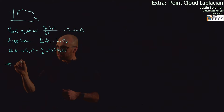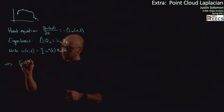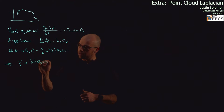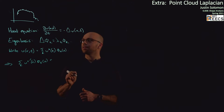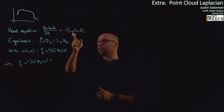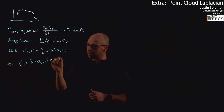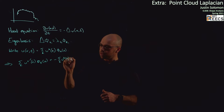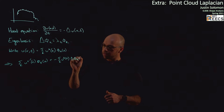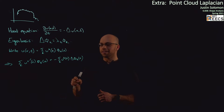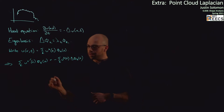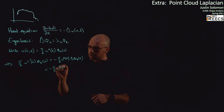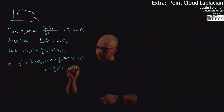If I write things in this eigenbasis and look back at the heat equation, the left-hand side du/dt is the sum over k of u_k'(t) times φ_k(x), and that equals minus the Laplacian of u, which is minus the sum over k of u_k(t) times the Laplacian of φ_k(x). Since I strategically chose φ_k to be eigenfunctions, this becomes minus the sum over k of u_k(t) times λ_k times φ_k(x).